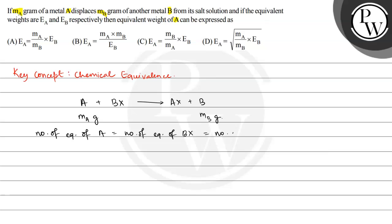number of equivalents of B. We can represent number of equivalents using mass: given mass of A divided by equivalent mass of A. This gives us the number of equivalents of A.